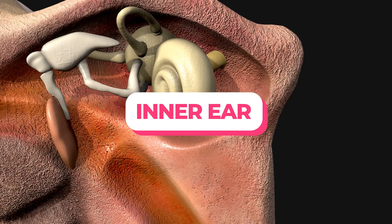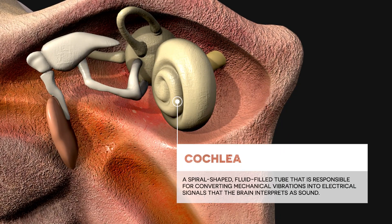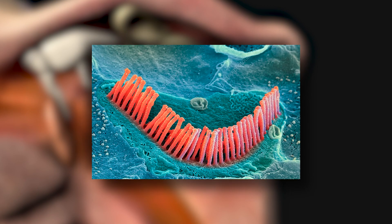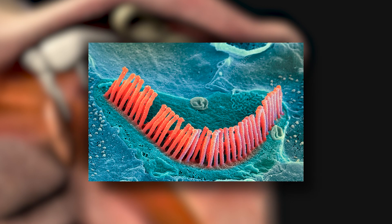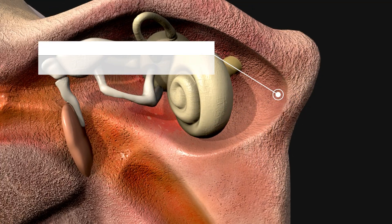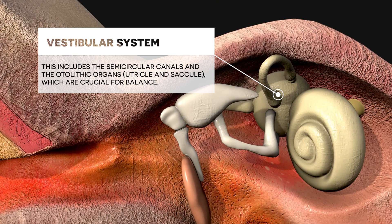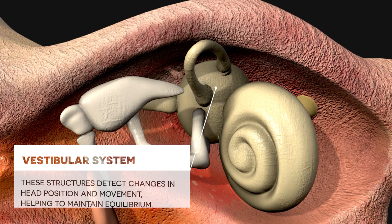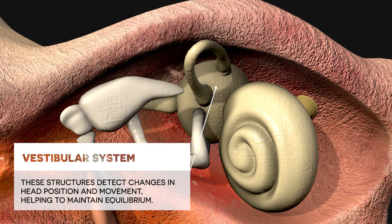The inner ear contains the cochlea, a spiral-shaped, fluid-filled tube responsible for converting mechanical vibrations into electrical signals that the brain interprets as sound. It contains tiny hair cells that move in response to fluid vibrations, creating nerve impulses. The vestibular system — including the semicircular canals, utricle, and saccule — is crucial for balance, detecting changes in head position and movement to maintain equilibrium.